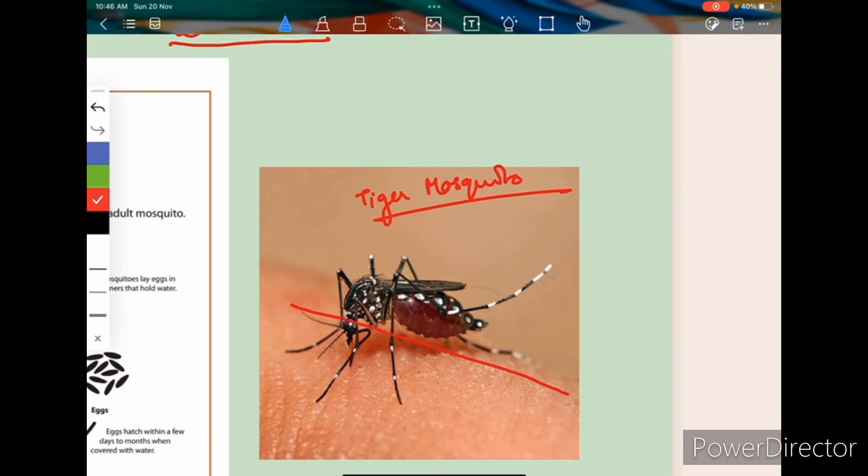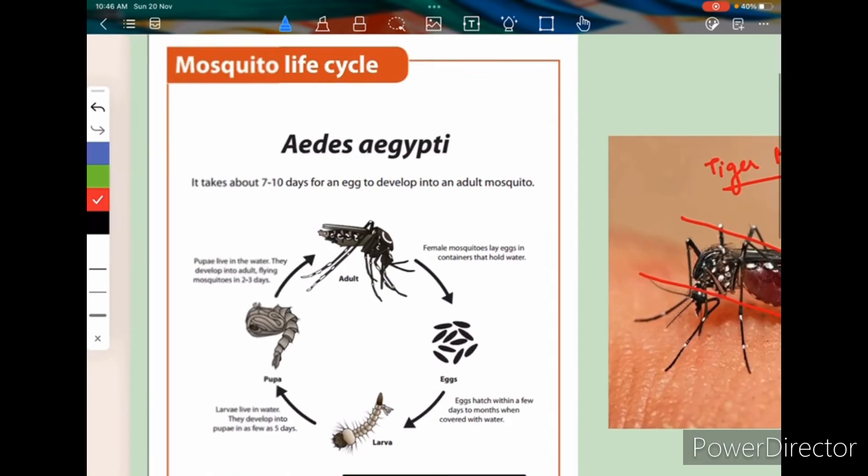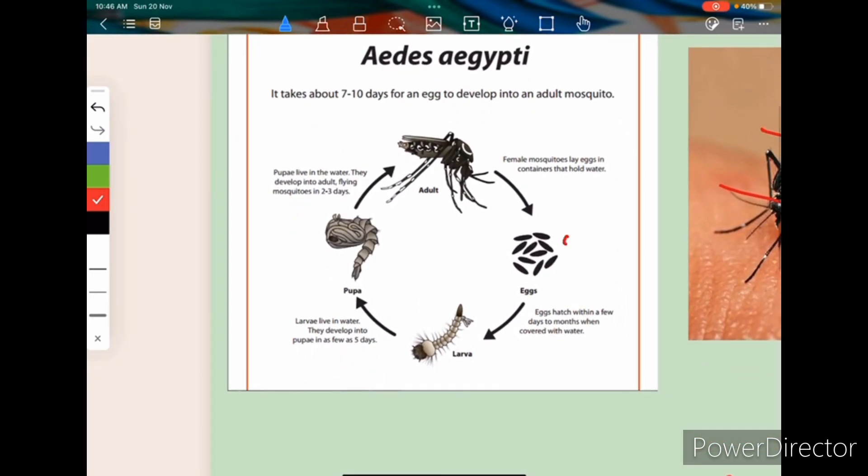And you can see this is the ground. It is also sitting parallel to it. And if you see the eggs, single cigar-shaped.